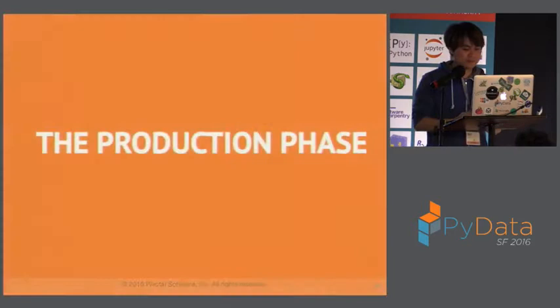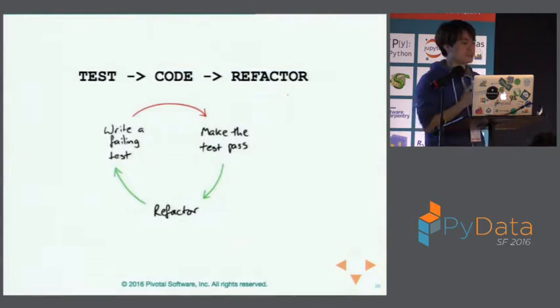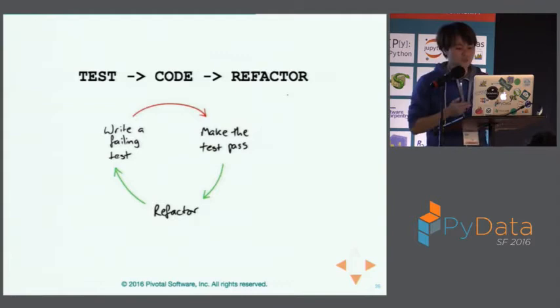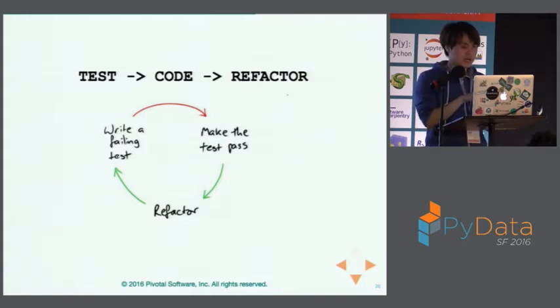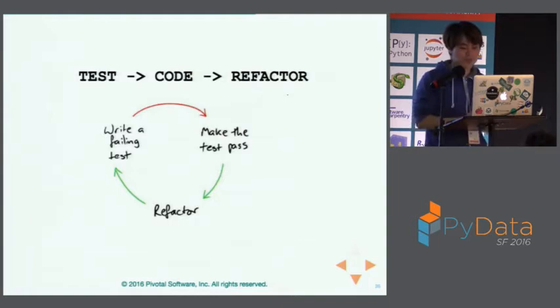The next phase is called the production phase. At this stage, we start to do test-driven development, which is really good because TDD helps to keep our code base clean and trustworthy. The flow is: write failing tests, make the tests pass, then refactor the code, and repeat until you're satisfied. We usually separate the code from the exploration phase from production — moving from Jupyter notebooks to scripts, because you cannot test a Jupyter notebook. We pair a lot with software engineers to develop this code.